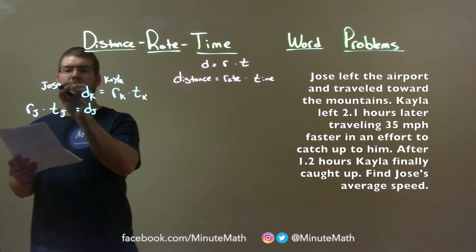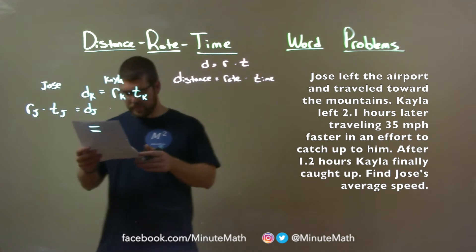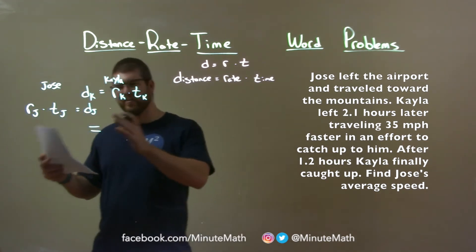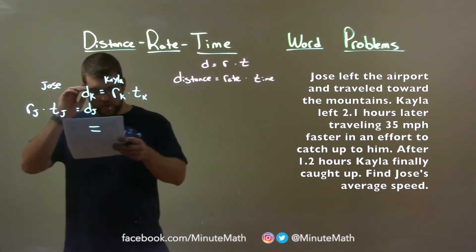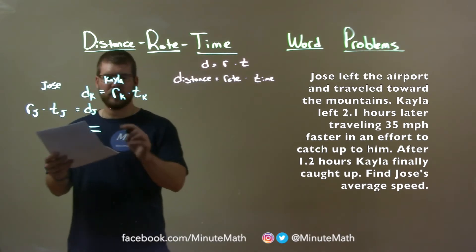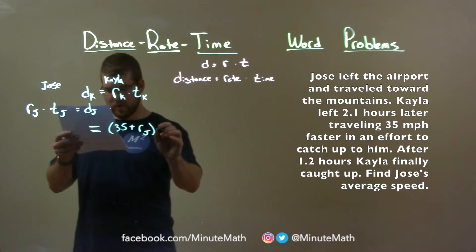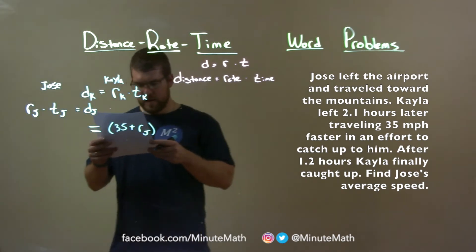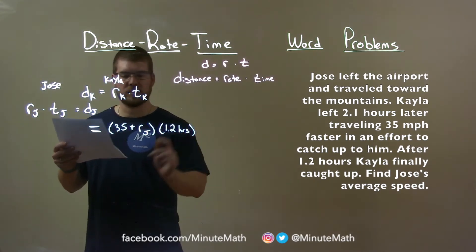We're going to set them equal to each other. How can we write this? They're explained in terms of each other. Kayla's rate - they said Kayla was traveling 35 miles per hour faster than Josie. So her rate is 35 plus the rate of Josie's, RJ. And she traveled for 1.2 hours before she caught up.